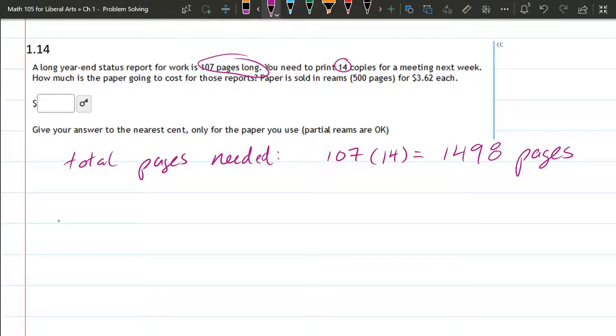All right, so let's start with the pages. There's the pages you need to print. Now we have 500 pages cost $3.62 each. So what I want to do is write this.